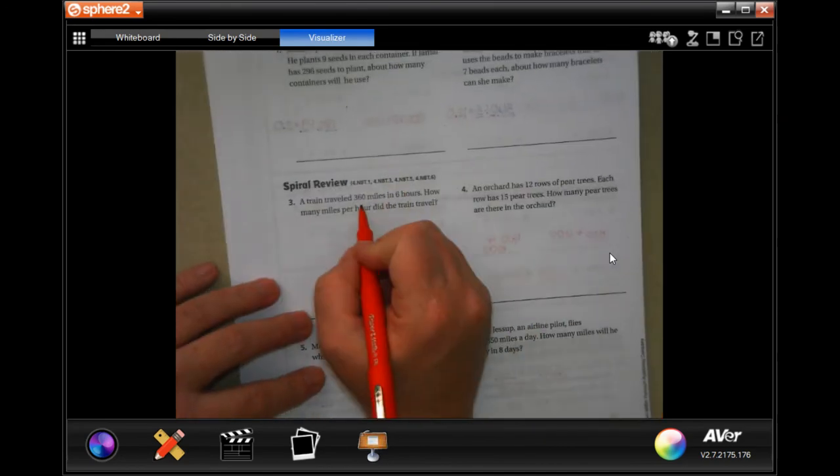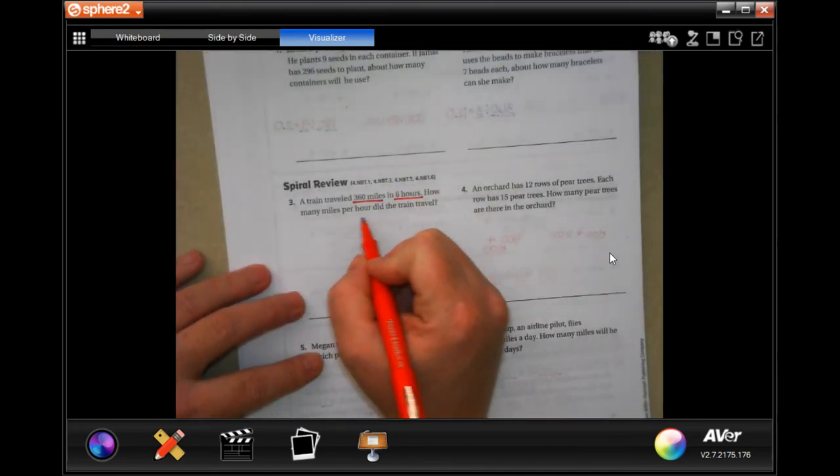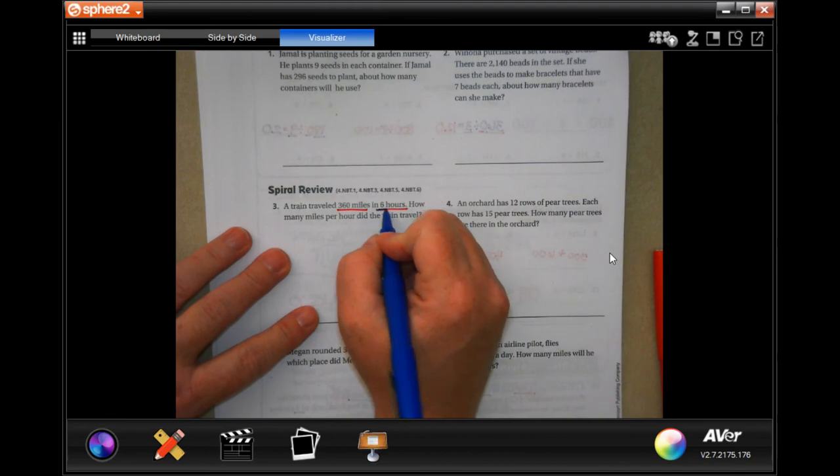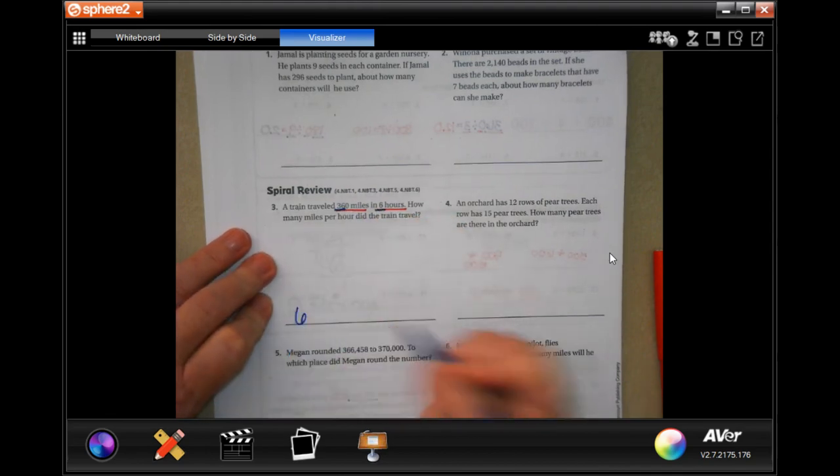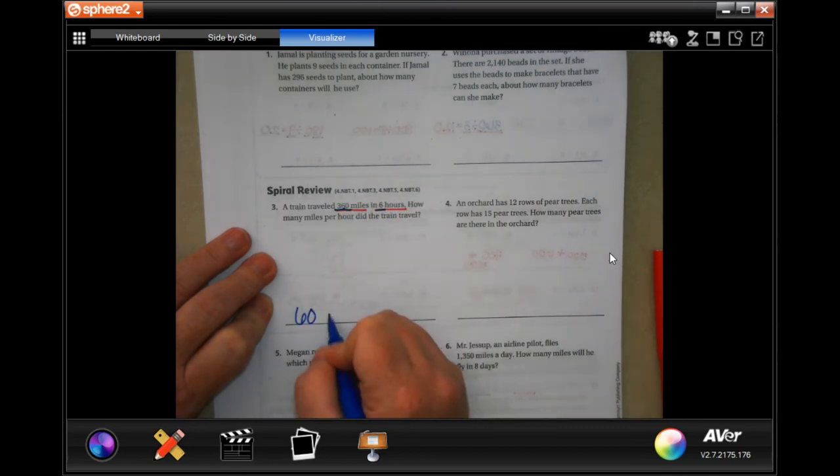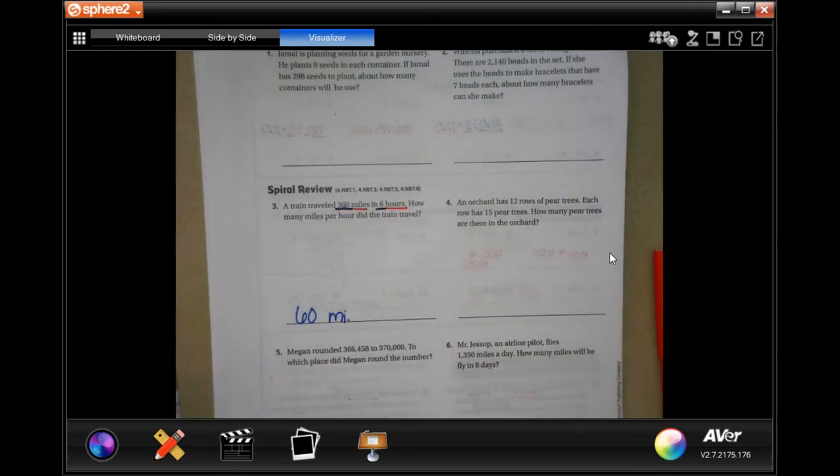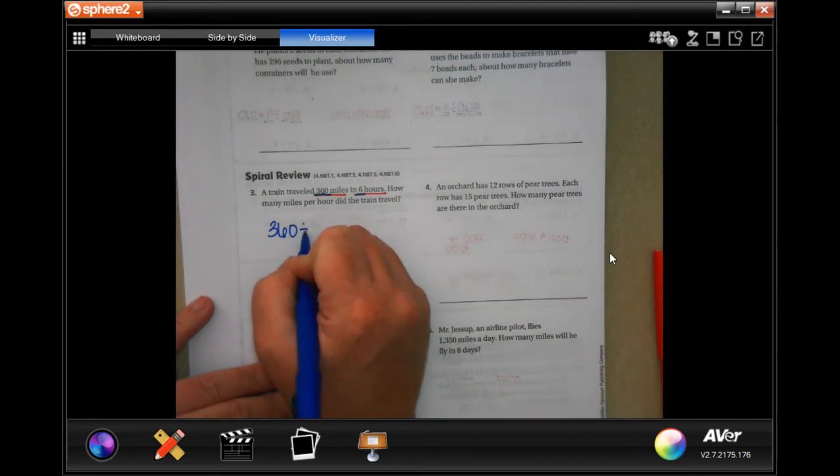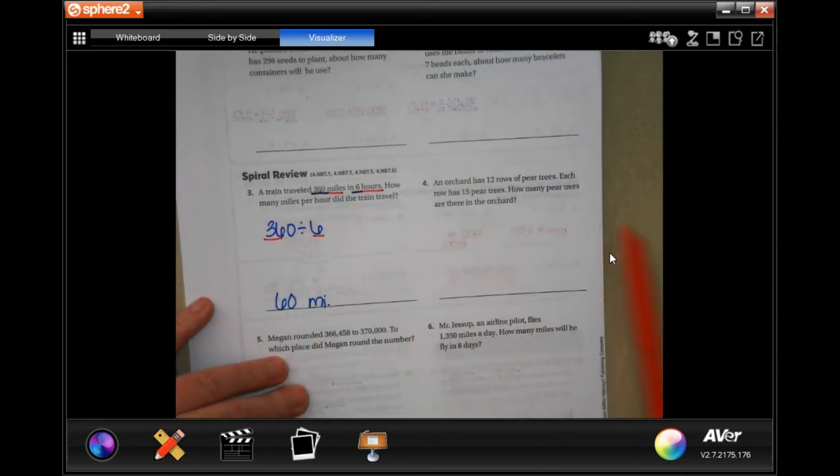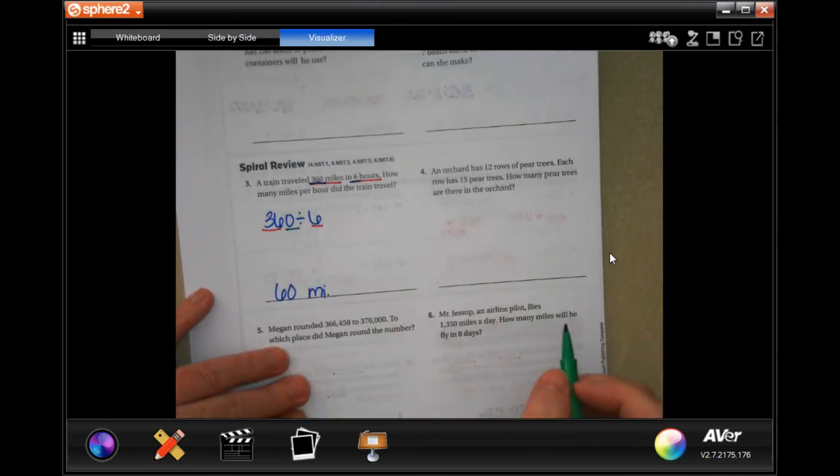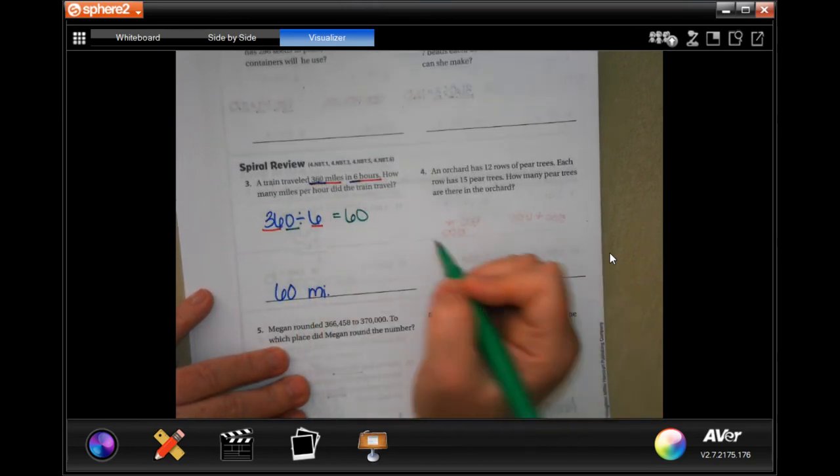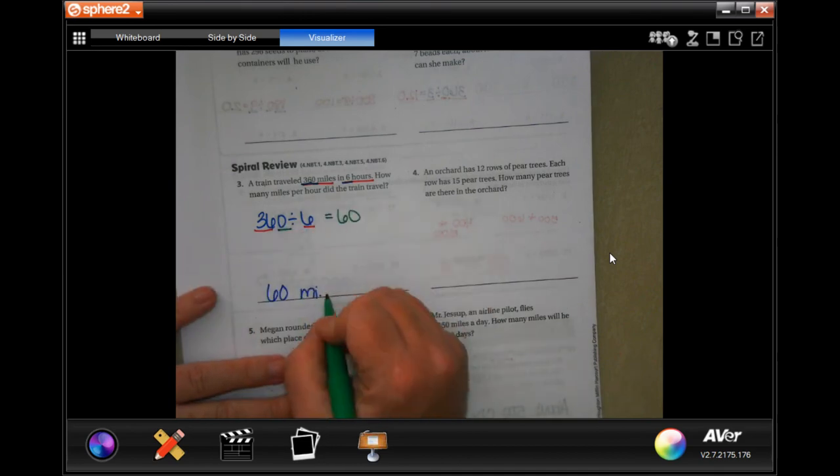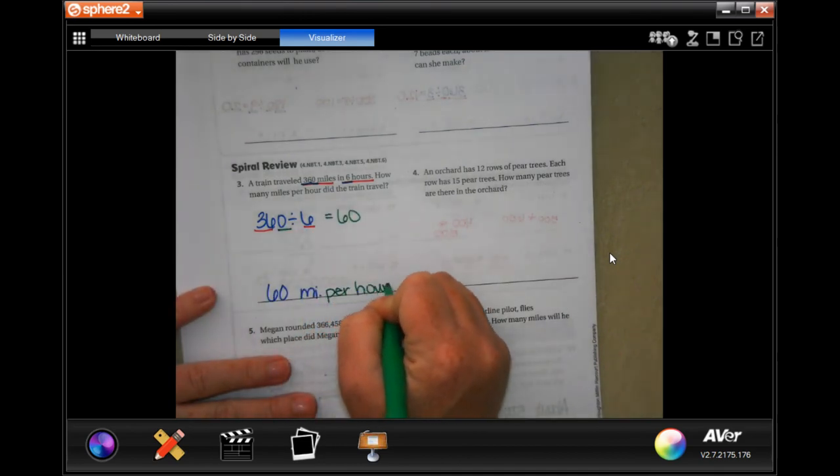All right, a train traveled 360 miles in six hours. How many miles per hour does a train travel? Well, let's do it the same way we've been doing it on this lesson. 6 goes into 36 six times, 6 times 6 is 36. Then we're going to add on that zero, 60 miles. I'll write it here for you. So now 36, 6, then add on the zero. Oh, and that's per hour.